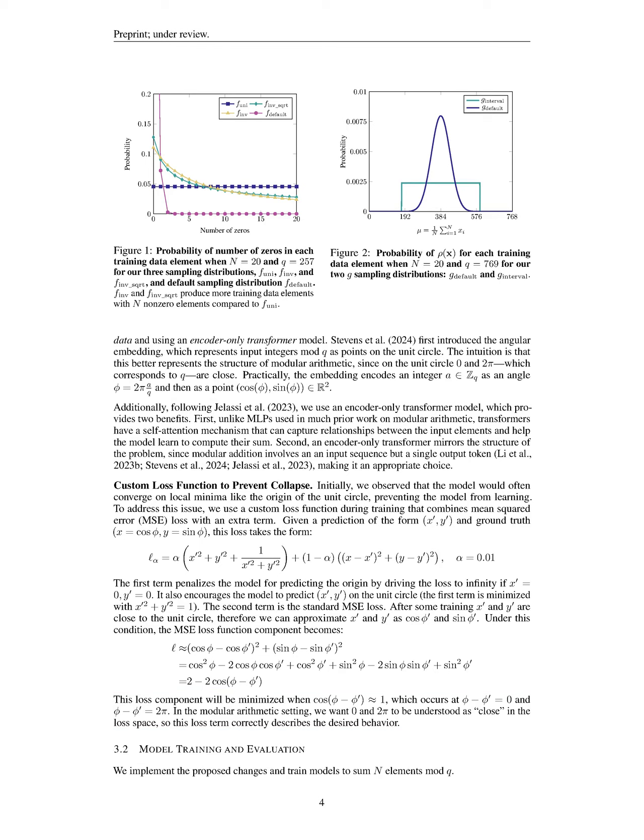In this section, we discuss the challenges machine learning models face in performing modular addition, despite their success in other mathematical tasks, and propose new methods to enhance their performance by improving training data diversity, introducing an angular embedding for better representation, and designing a custom loss function to prevent convergence at local minima. Our approach significantly outperforms previous efforts, enabling models to handle larger sets of elements and moduli, which is crucial for applications in number theory and cryptography.